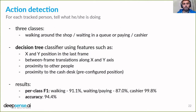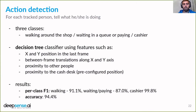Another component was action detection. For each tracked person we wanted the model to tell us what they are doing. We had three classes: walking around the shop, waiting in a queue or paying at the cash desk, and being a cashier rather than a customer. For this purpose we used a decision tree classifier with feature engineering based on X and Y position, between-frame translations along X and Y axes, proximity to other people, and proximity to the predefined position of the cash desk. We achieved satisfactory results, visible as numbers at the bottom of the slide.